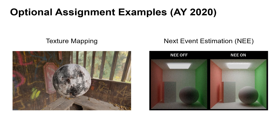Especially in the 2020 academic year, there were many self-motivated students who took on advanced topics voluntarily. Let me introduce two examples here: one is using texture mapping for an aged scene, and the other is next event estimation, which is one of the sampling optimization methods. Regarding the latter, mesh rendering and lighting with area lights were also implemented. This fact empirically proves that the educational material was flexible for extension.